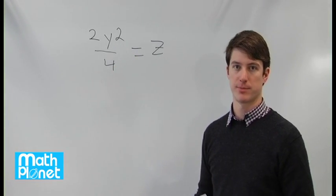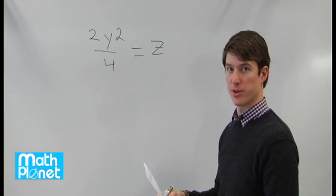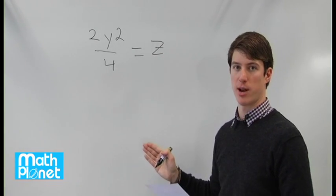Y has to be between 0 and 9. Those are the only choices. So we can try different values for y and see if we can get an integer out for z.